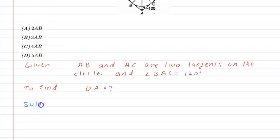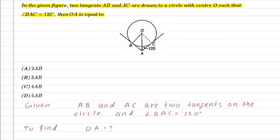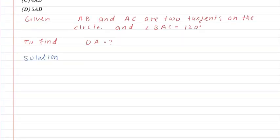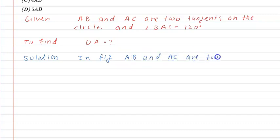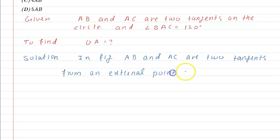Let's see the solution. We will find out that triangle AOB and triangle AOC are the two triangles formed. AB and AC are two tangents from an external point A on the circle. We can see that AB is equal to AC as they are tangents from the same external point A.